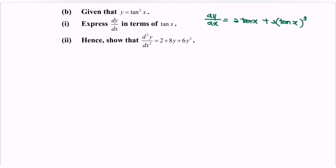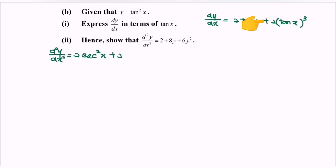For the second derivative: differentiate 2 tangent x, and we will have 2 sec squared x, plus differentiate 2 tangent cubed x. So we will have 3 tangent x bracket squared. Differentiate the internal function, and we will have sec squared x. Then differentiate the tangent x, and we will have 1.